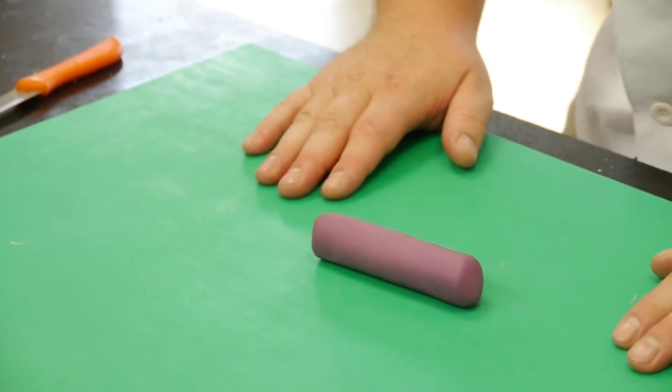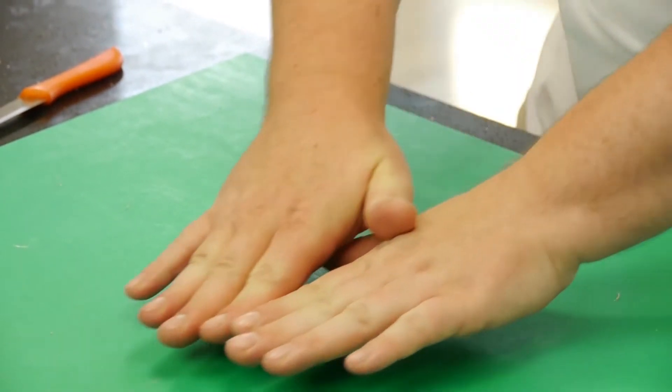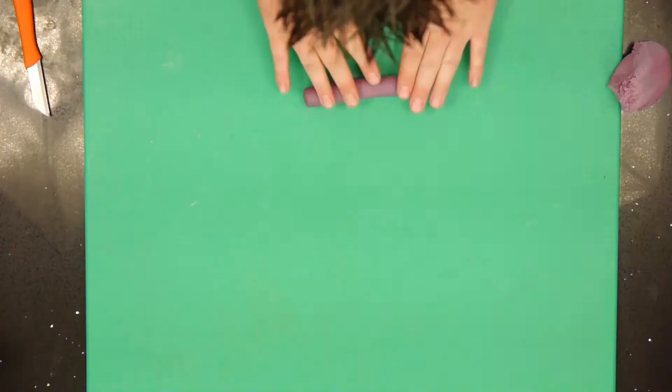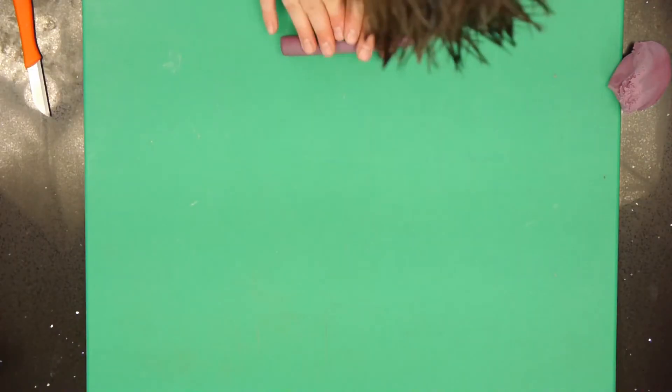Now once you get to there you can use two hands and when you're back and forward, always rocking nice and gentle and always touching a different part of the sugar paste as you're stretching it.